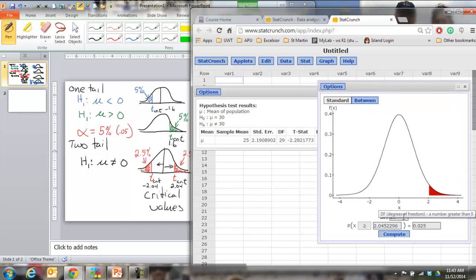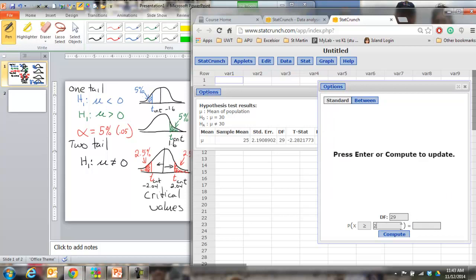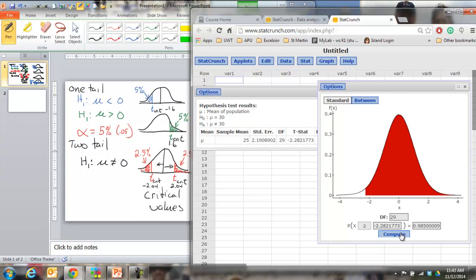When you would have to double would be if we go back to StatCrunch and we use the calculators. So now you have the question of you had a sample size of 30, you had a test statistic. They give you a test statistic: negative 2.2821773. And then they tell you it's a two tailed test and they want to know what the p-value is. And you go well this is a negative number so I have to do less than because I always want to the extreme. And I look at my picture and that makes sense.